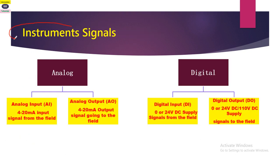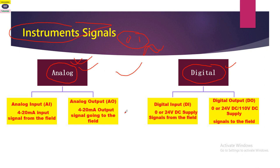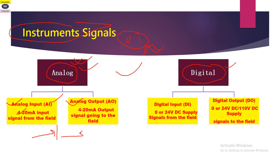Now the instrument signal types: as you may have studied, there are two types of signals — analog and digital. Analog is continuous in nature, and digital is zero or one. Analog also has two subtypes: analog input, which may be a 4 to 20 milliampere signal coming from the field to the PLC, and analog output, which is a 4 to 20 milliampere signal going from the PLC to the field.